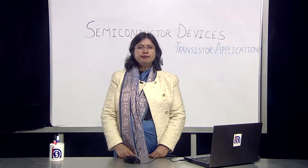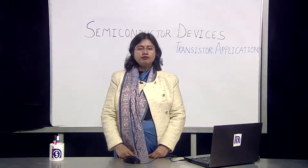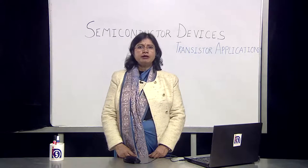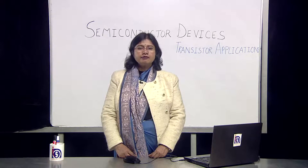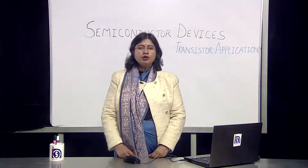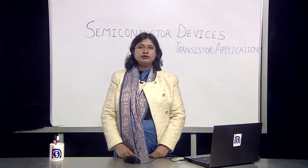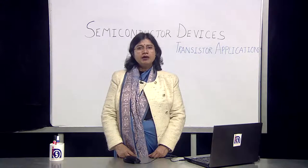To understand it simply, an amplifier is a circuit which is capable of multiplying the input. One of the common examples of an amplifier is a loudspeaker. We have seen a loudspeaker or a microphone — we put an input audio signal and we receive an output audio signal which is much amplified as compared to the input signal. Thus, a loudspeaker is an amplifier.